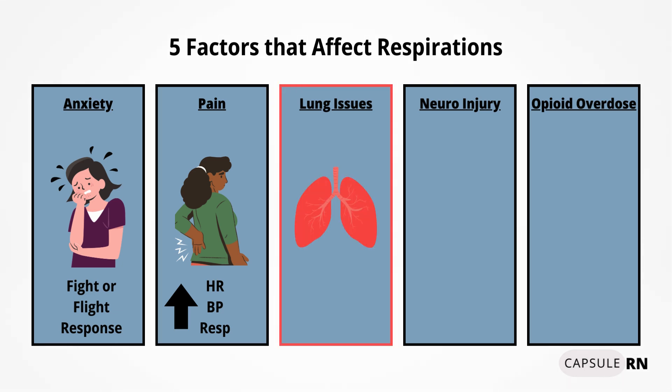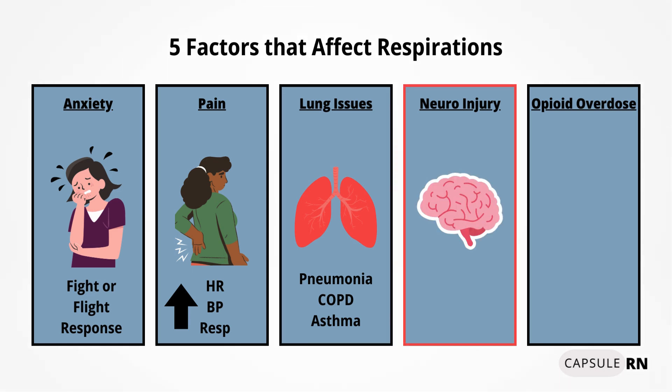Third, there are lung issues — things like pneumonia, COPD, and asthma. Lung issues can lead to decreased oxygen or increased carbon dioxide levels in the blood, and the body activates faster breathing in an attempt to correct these unhealthy levels. Fourth is neurological injury. The brain stem is at the bottom of the brain and connects the brain to the spinal cord. The brain stem controls breathing. If there is a neurological injury and the brain stem is affected, it can start sending faulty messages to the lungs to involuntarily breathe faster or slower than it really should.